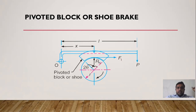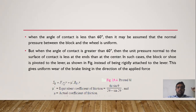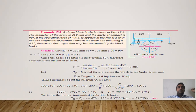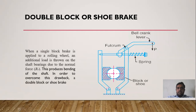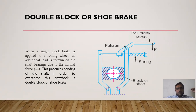When 2-theta is greater than 60 degrees, we use pivoted block brakes, in which mu is converted into mu-dash, the equivalent coefficient of friction, calculated as: mu' = 4*mu*sin(theta) / (2*theta + sin(2*theta)). Double shoe brakes are used to overcome the drawback of single shoe brakes, where bending of the shaft occurs.